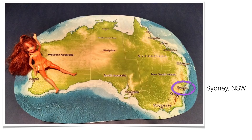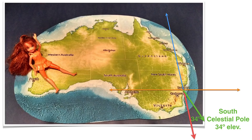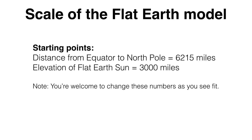Welcome to Australia. We're going to go down to Sydney, New South Wales — it's got a 34-degree south latitude. So there's an east-west line, a line facing the north pole, and a line facing south. Then we're going to raise up 34 degrees elevation to have the south celestial pole in the southern sky of Sydney. That's important.